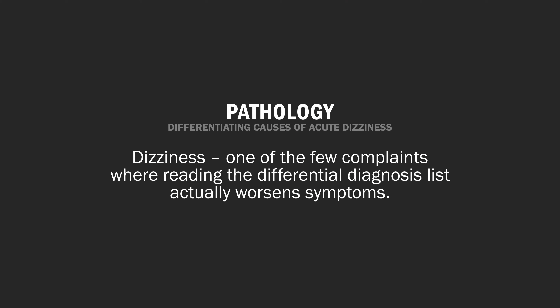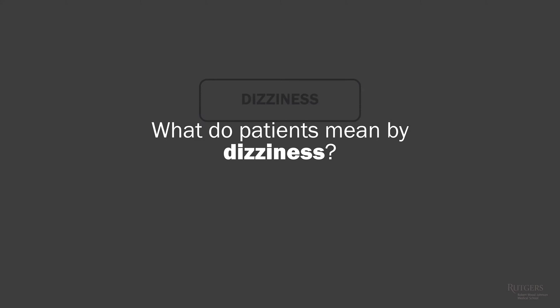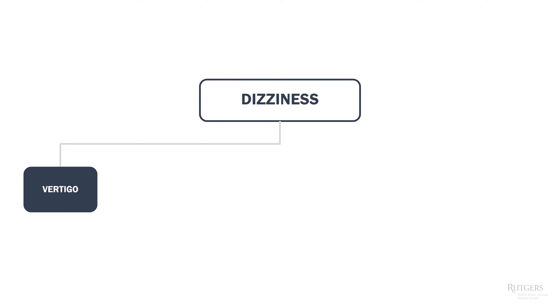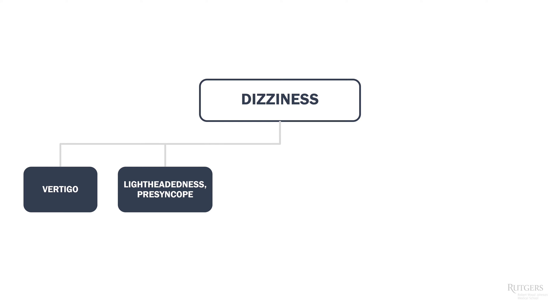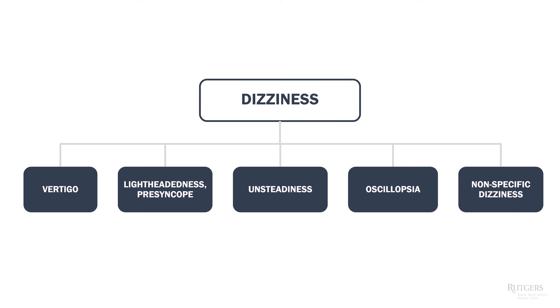Now it's a good time to discuss pathologies. Our patient presented to the ER, and the physician rightfully asked: what do you mean by dizziness? Patients with acute dizziness can mean at least five things: vertigo (a sensation of self-motion where no self-motion is occurring), lightheadedness or presyncope (impaired spatial orientation without false sense of motion), unsteadiness or disequilibrium, oscillopsia (false sensation that the visual surround is moving), and nonspecific dizziness — symptoms too vague to classify.